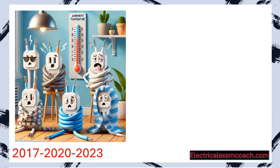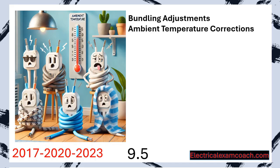Hey everyone, welcome back. I am the Electrical Code Coach from electricalexamcoach.com, and this is lesson 9.5 in our video series. In this lesson we're going to be learning about bundling adjustments and ambient temperature corrections. These are a subset of ampacity — remember, ampacity is just how many amps the wire can handle safely under its conditions of use without exceeding its temperature rating.